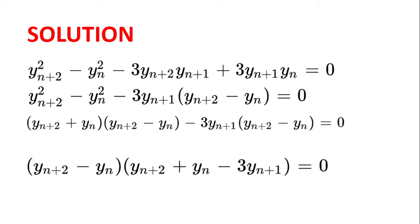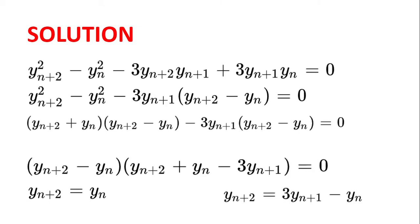Now we know that at least one of the brackets must equal zero, so at least one of yₙ₊₂ equal to yₙ or yₙ₊₂ equal to 3yₙ₊₁ minus yₙ is true. We look at the first few terms of the sequence and they are all integers, so yₙ₊₂ will be an integer, and the same for yₙ₊₃, yₙ₊₄, and so all terms in the sequence will be integers.